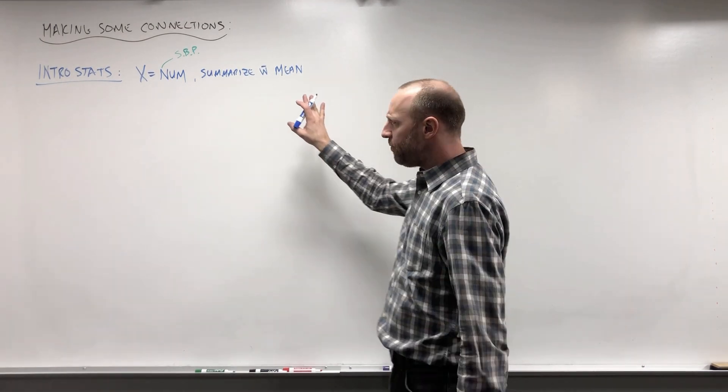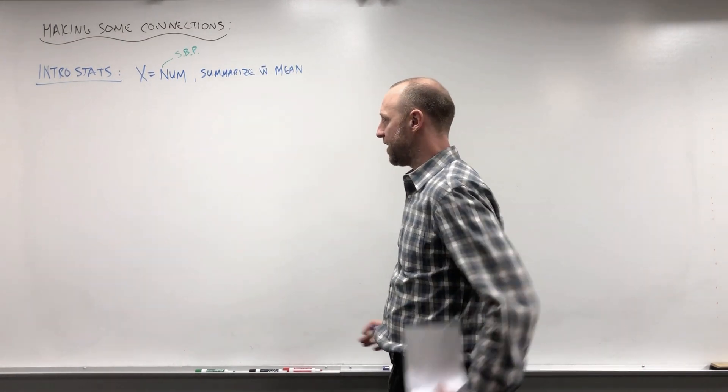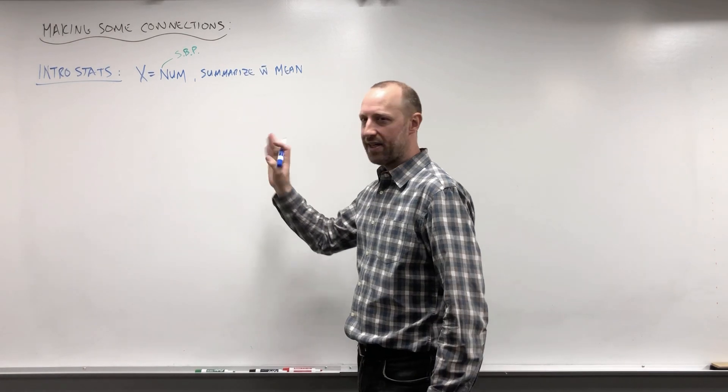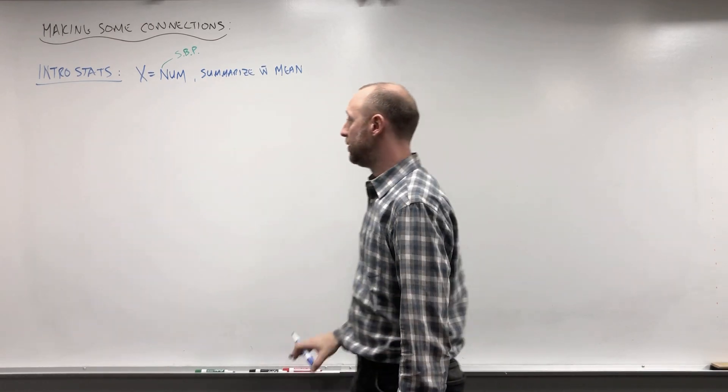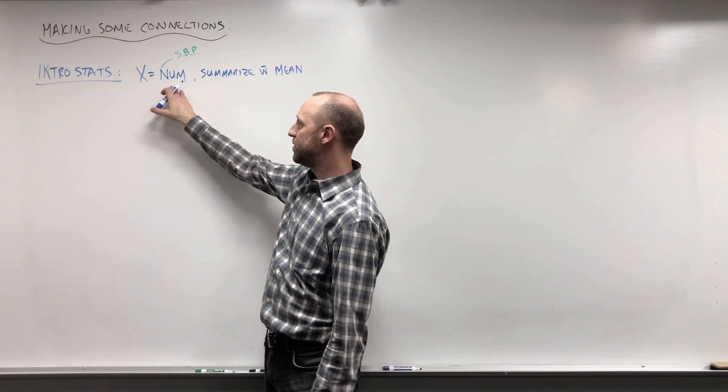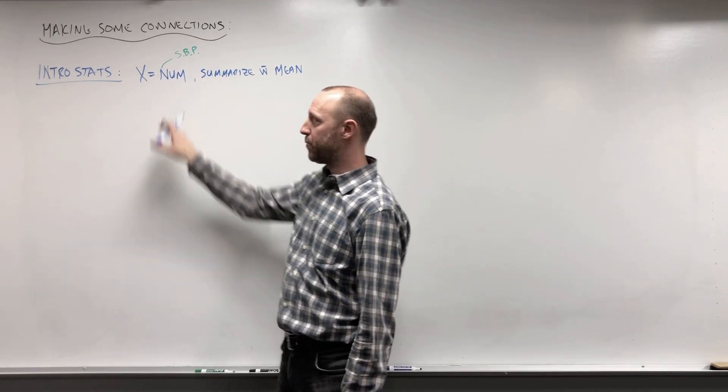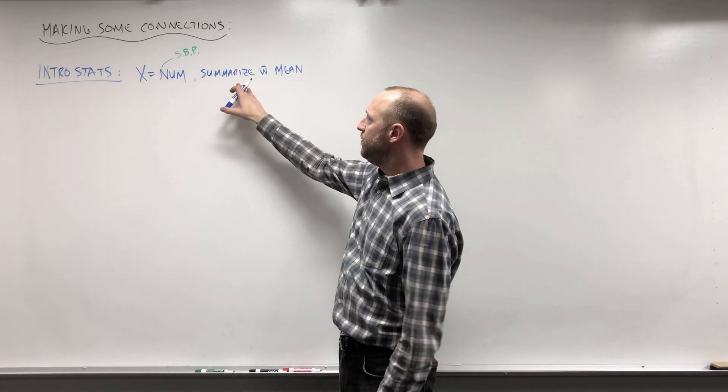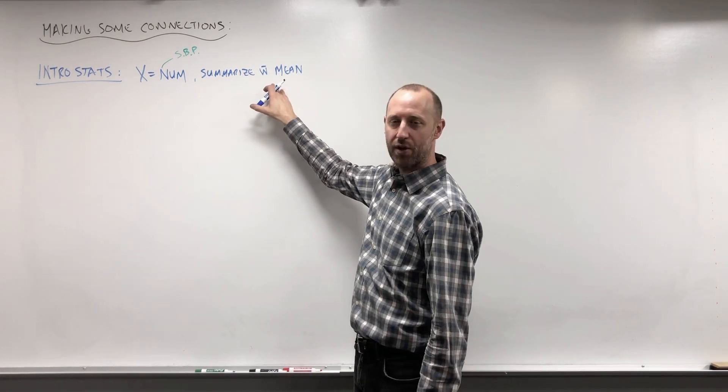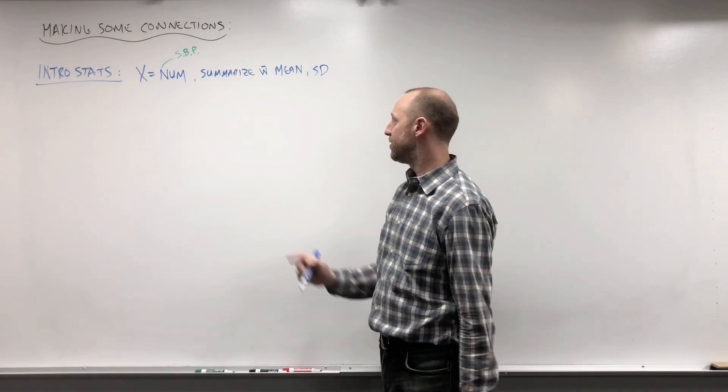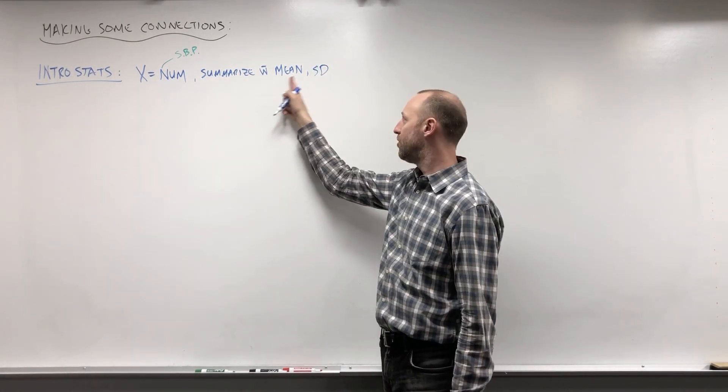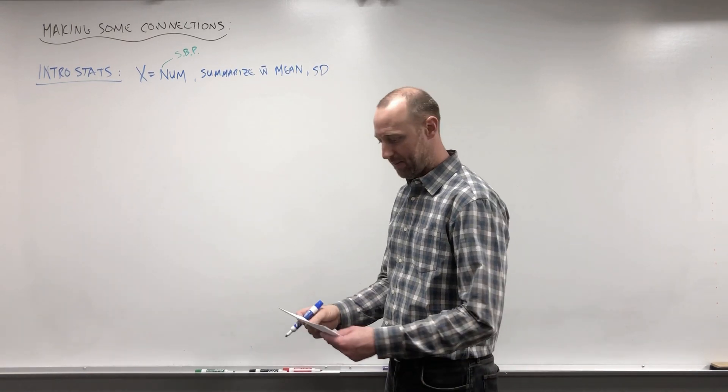At the very beginning of an intro stats course, you learn things like types of variables. So a variable can be numeric or categorical. Suppose X is numeric, systolic blood pressure. Then we learned that we can summarize numeric variables with means and standard deviations to describe a center or typical value, and on average how far things move from that mean.